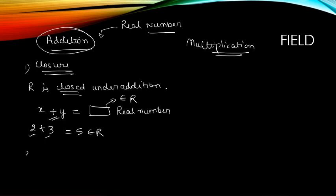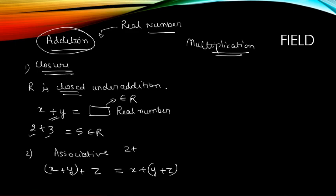Addition is also associative. When we have three numbers to add, it is our choice whether we want to pair up the first two or the last two — the result will be the same. For example, 2 plus 3 plus 6: doing (2+3)+6 gives 5+6 = 11, or 2+(3+6) gives 2+9 = 11. Both are the same, so addition follows the associative property.